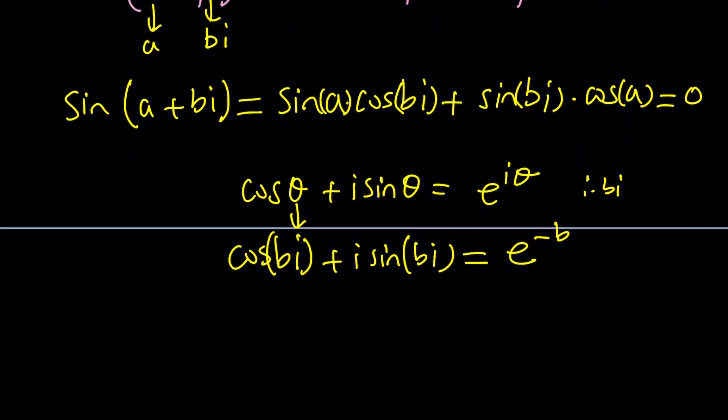What happens if we replace theta with negative bi? Then we get cosine bi minus i sine bi equals, wait a minute, we replace theta with negative bi but cosine is even so it didn't change but sine had to change. So if you replace that you're going to get e to the b.